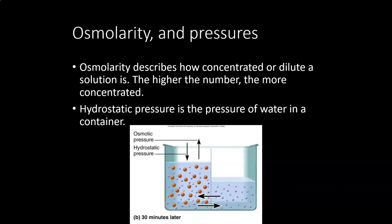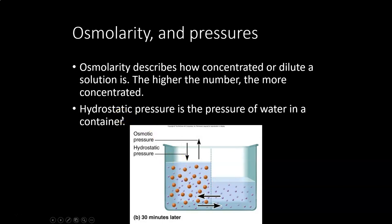Hydrostatic pressure is the pressure of water within a system. As water moves through the membrane and increases the volume on one side, gravity pushes back down. Eventually it reaches a point where more water can't cross because there's too much force against it — that's the hydrostatic pressure counteracting osmosis.